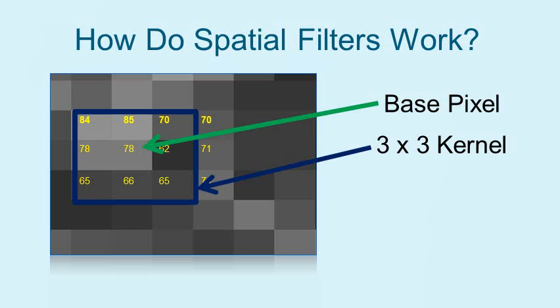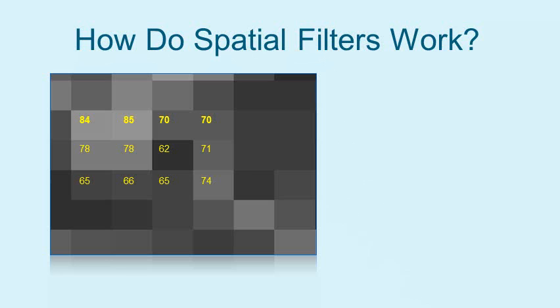Kernels can vary in size, but are typically 3x3, 5x5, or 7x7 windows. To keep things simple in this concept module, we will only work with a 3x3 filter.